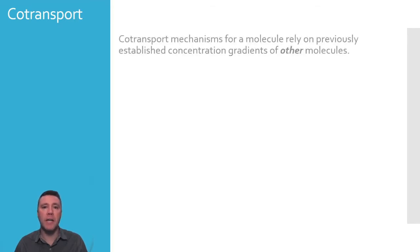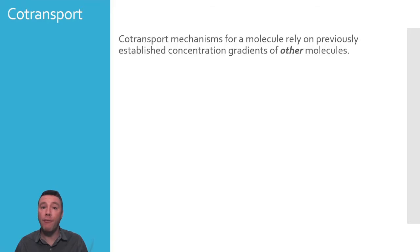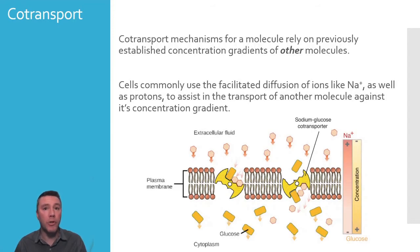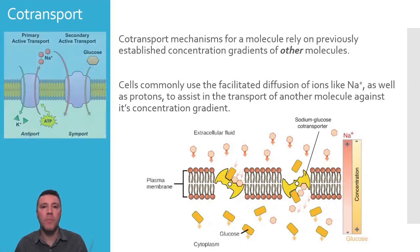Co-transport is a mechanism that relies directly on, and only functions due to, concentration gradients of other particles. For example, the facilitated diffusion of sodium back into a cell can be coupled with the transport of glucose up glucose's concentration gradient. This co-transport, called symport, is actually secondary active transport and allows cells to move glucose from a low concentration to a high concentration. This is only possible because of the previously established concentration gradient of sodium ions, thanks to the perpetual efforts of the sodium-potassium pump.